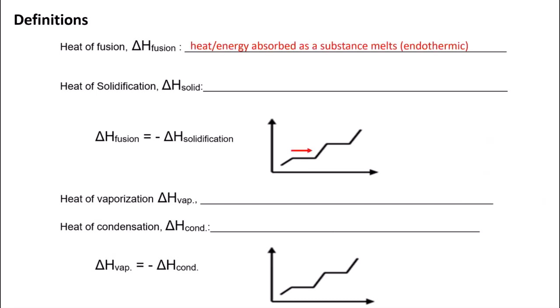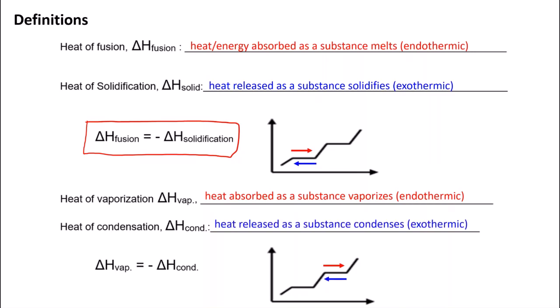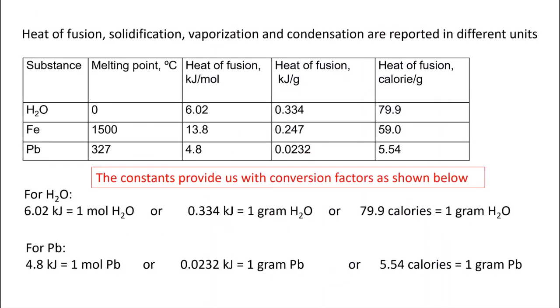The heat of fusion, delta H fusion, is the heat energy absorbed by a substance as it melts, shown by the red arrows. Heat of solidification, delta H, is the heat released as a substance solidifies. Notice that delta H fusion and delta H solidification have the same absolute value; all that changes is the sign. The heat of vaporization is the heat absorbed as a substance vaporizes, and the heat of condensation is the heat released as a substance condenses. Heat of fusion, solidification, vaporization, and condensation are reported in different units.